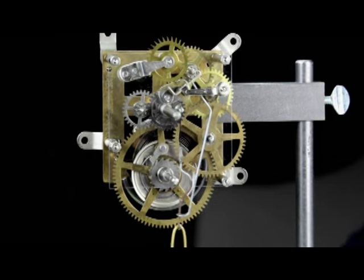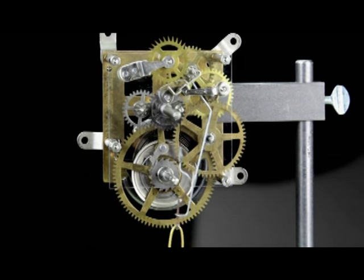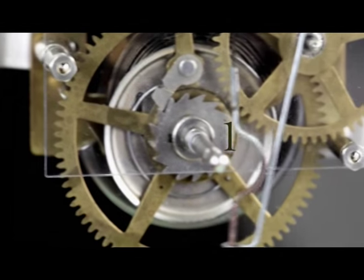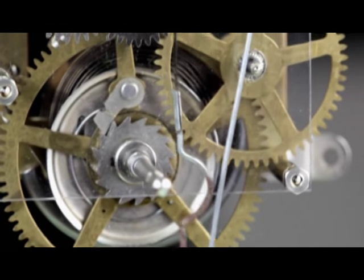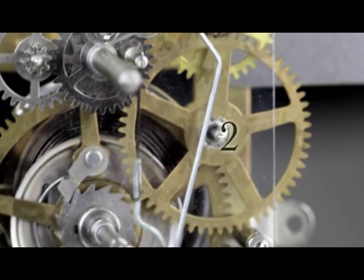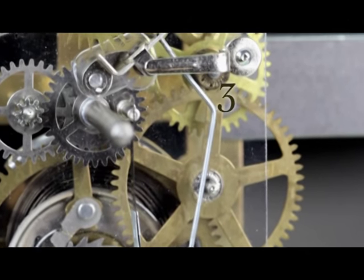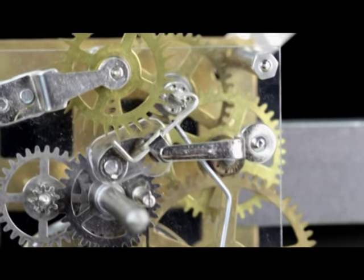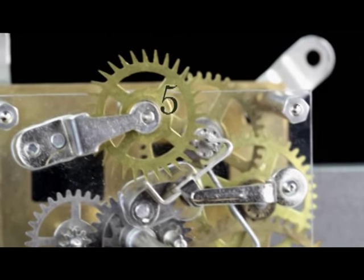The wheels in a train count from the power source up. In the going train, the mainspring assembly is wheel number one. The next wheel up the train that carries power from the mainspring is the second wheel, then the third wheel, and the fourth. The last wheel in this train is the fifth wheel, the escape wheel.